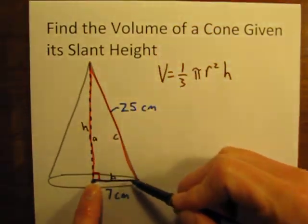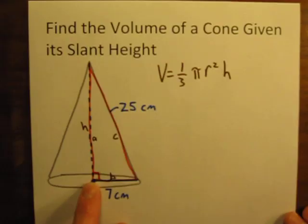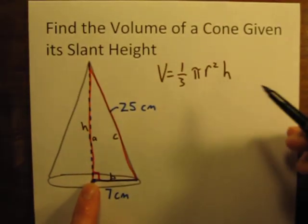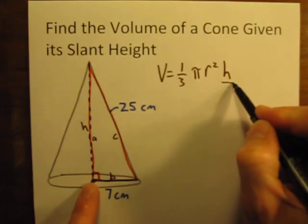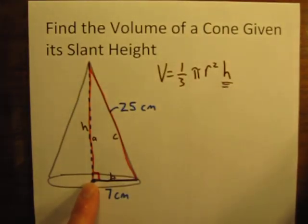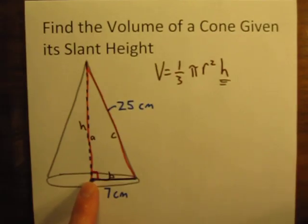And the two sides of that triangle that meet at the right angle are the legs, and those are sides A and B. So before we can calculate the volume, we need to calculate what the height is. To calculate the height, we need to use the Pythagorean Theorem.